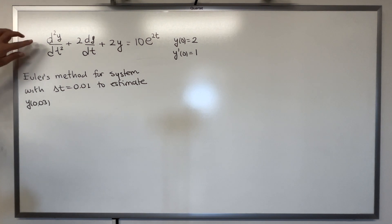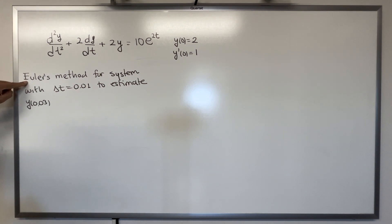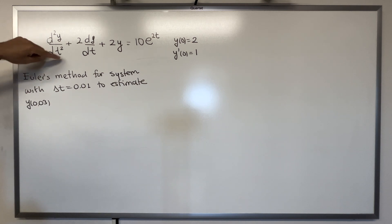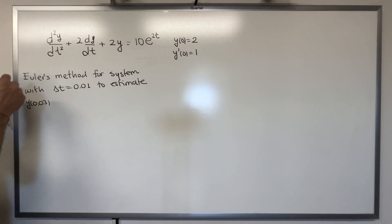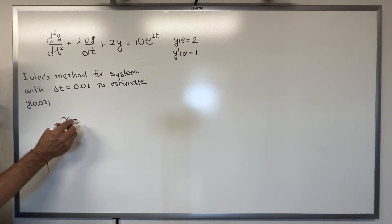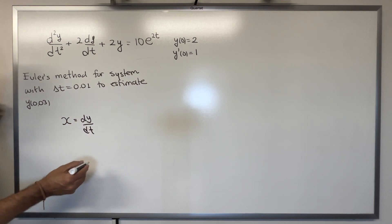The idea is to solve this second-order differential equation using the Euler method for systems. The first thing is that we don't have a system here — we want a system of first-order differential equations. Since we have a second-order differential equation, we need to create a system. To do that, we introduce the substitution x = dy/dt.